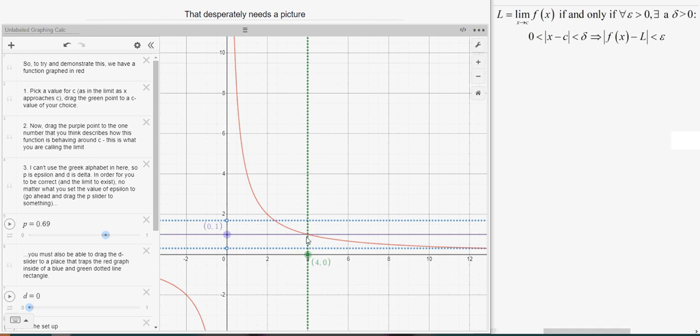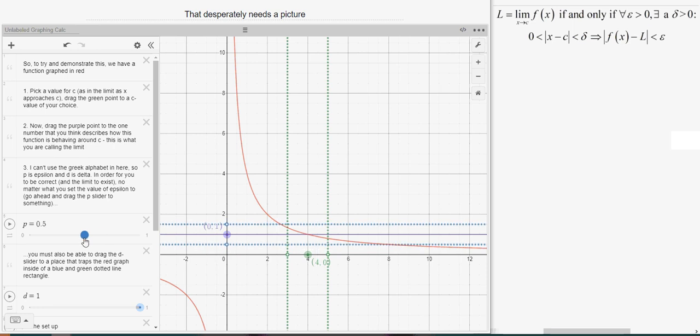Then we have to come up with a delta value, which is these over here, and the basic thing that we're shooting for is some way that we can, I've kind of trapped myself in here a little bit. I'm going to go with a little bit smaller epsilon.